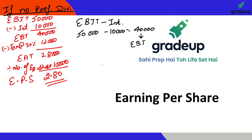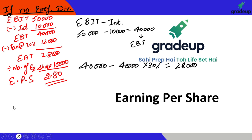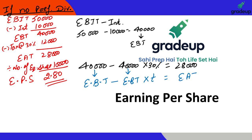After EBT, I can write it as 40,000 minus 40,000 into 30%, which is equal to 28,000. So I have simply deducted the amount of tax from the Earnings Before Tax. This gives us the Earnings After Tax (EAT).